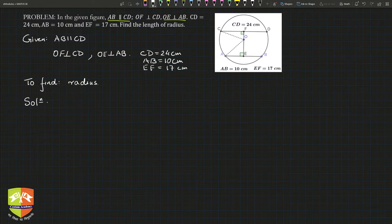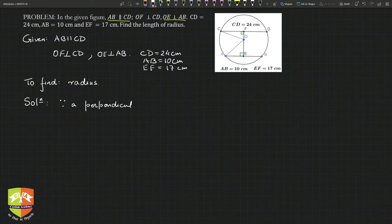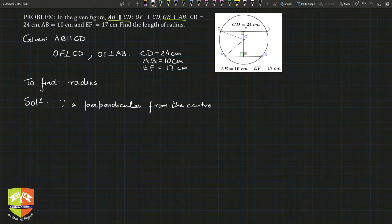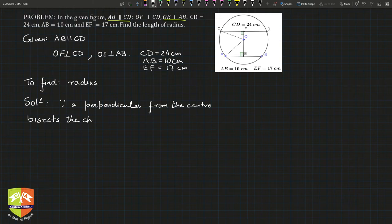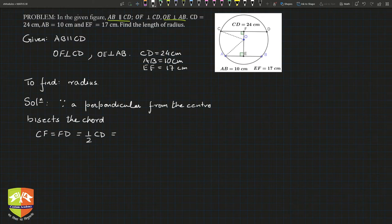Solution: since a perpendicular from the center bisects the chord — if you drop a perpendicular from the center onto any chord, it will bisect the chord. So we can say CF is equal to FD, and that equals half of CD. CD is 24 centimeters, so CF equals 24 divided by 2, which is 12 centimeters.